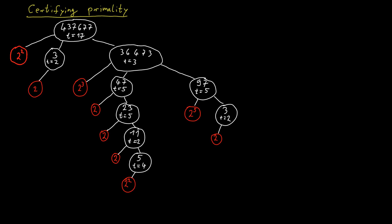So we get a tree like this which represents the entirety of our certificate — it's a recursive certificate. We start with the number at the top, provide the value of t, provide the prime factorization of the number at the top minus 1, and for each of the prime factors we provide recursive certificates. We observe that the leaves of the tree are all powers of 2, because for 2 we simply know it is a prime number.